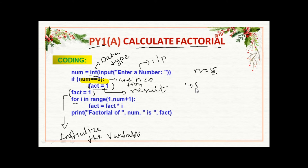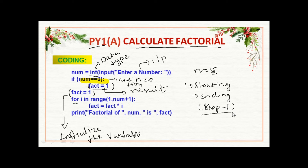In this for loop, 1 is the starting value. The ending value — that is, stop value — is minus 1. Because of this, we declared num plus 1, so the final value is num. The for loop range function has starting value 1 and stopping value num plus 1.